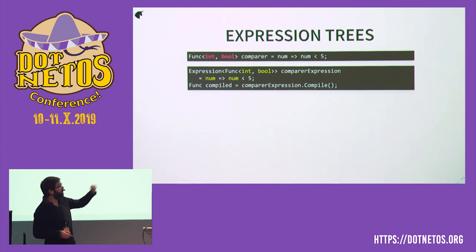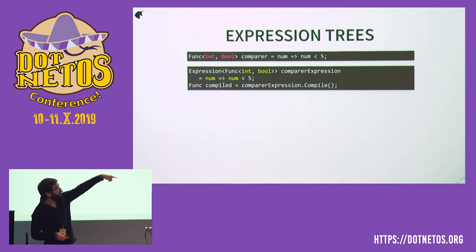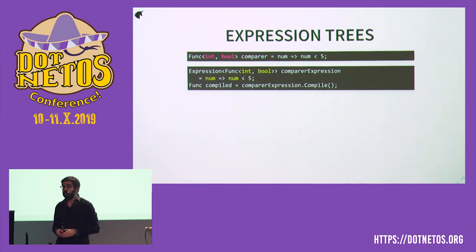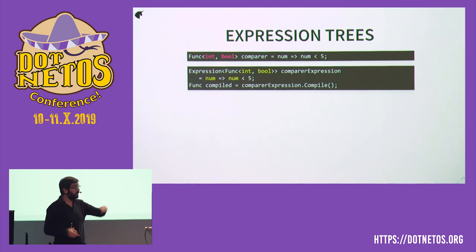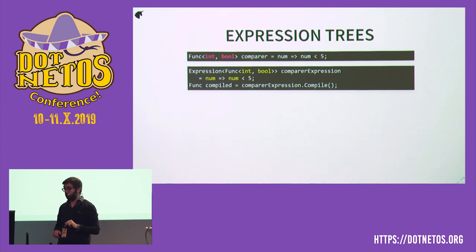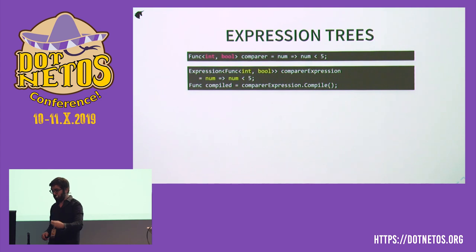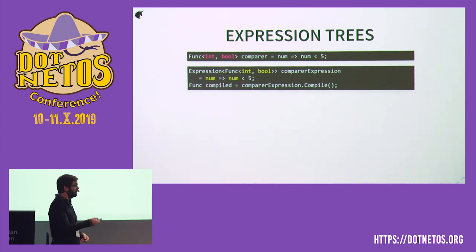What we can do with that representation is compile it — that's the second line. At that point, we do have the function. We get to the same thing we have in the first line, but via more complicated means. We can also generate the expression tree ourselves explicitly using the expression tree API.